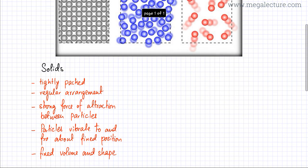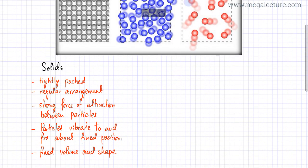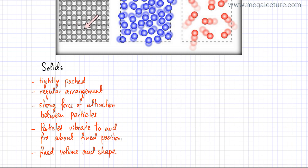When particles are present in solid state, they have very strong forces of attraction between particles. The reason why these particles are so tightly packed is because each particle is attracting the others with a very strong force of attraction. So all of them are strongly attracting each other, which is why they are all close together, tightly packed, and rigidly fixed in place.